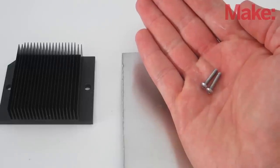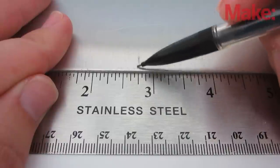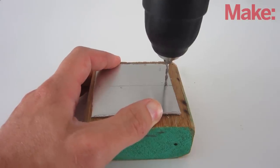We're going to attach the heat sink to the aluminum plate with a pair of machine screws. So mark the locations of the mounting holes onto the plate and drill holes that are slightly smaller than the screws.